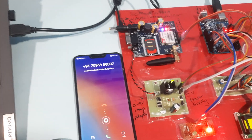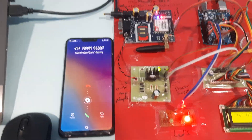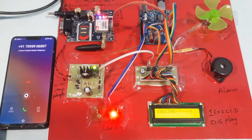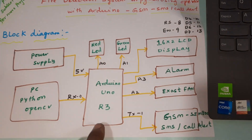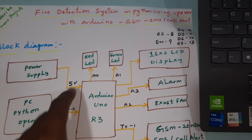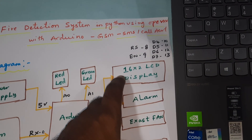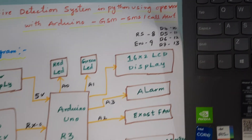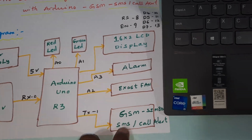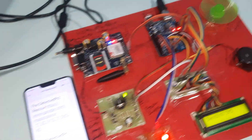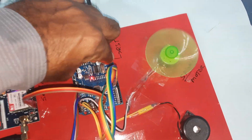This is our block diagram: power supply module, Arduino Uno R3 board, Python, red LED, green LED, 16x2 LCD display connected via RS, Enable, D4, D5, D6, D7, alarm, exhaust fan on A0, A1, A2, A3, and GSM module. Press the reset button to restart.